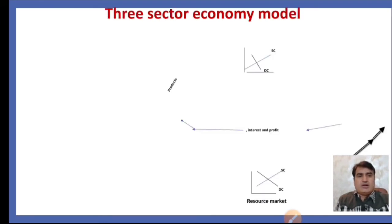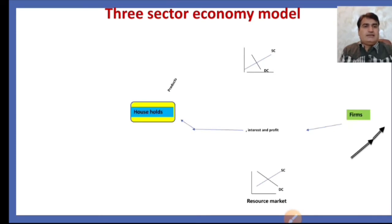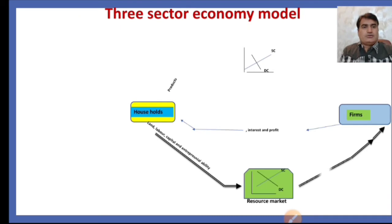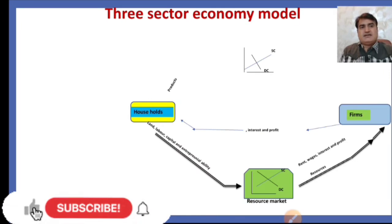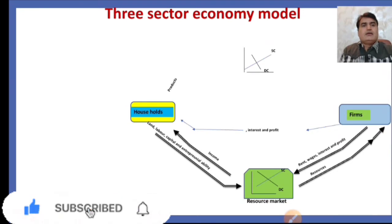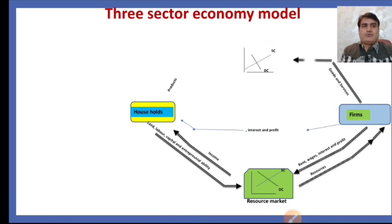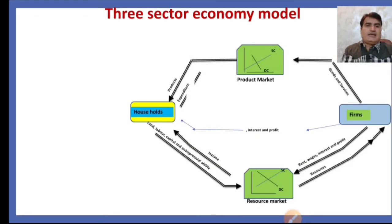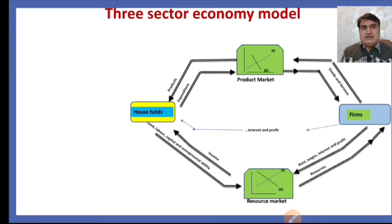This is the three-sector economy model. Here we have the household and the firm. The household provides factors of production towards the firm through the resource market, and the firms in return give rent against land, wages against labor, interest against borrowed capital, and profit against entrepreneurial skills. That becomes the income of the household. The firms then provide goods in the product market and the household makes expenditure on the purchase of those goods, which becomes the income of the firms. Up to this extent it describes the two-sector economy, as there is no economic relation with the rest of the world — no exports and imports.